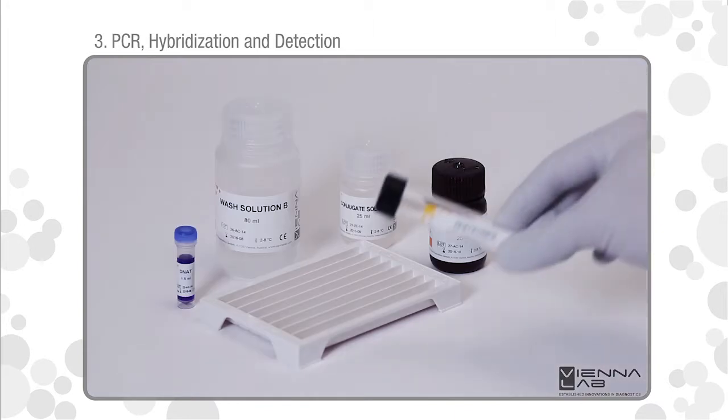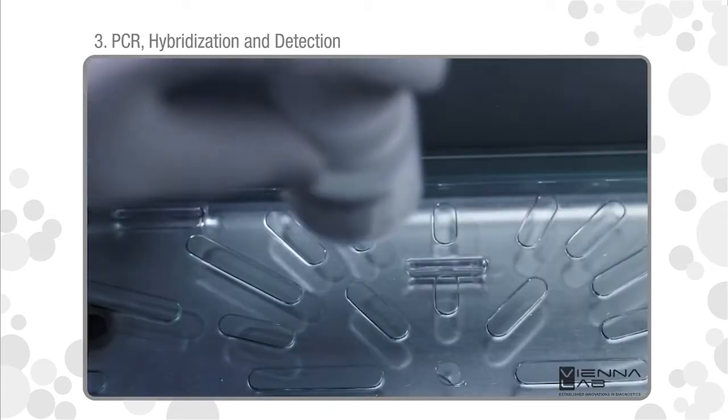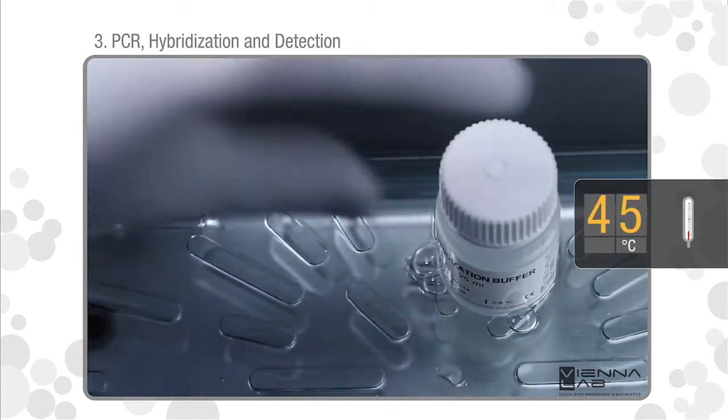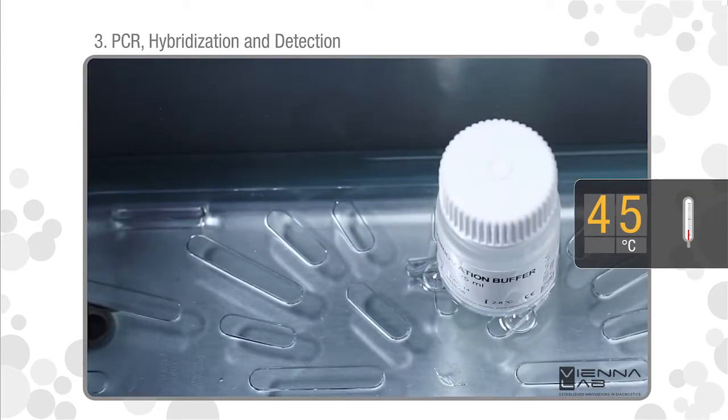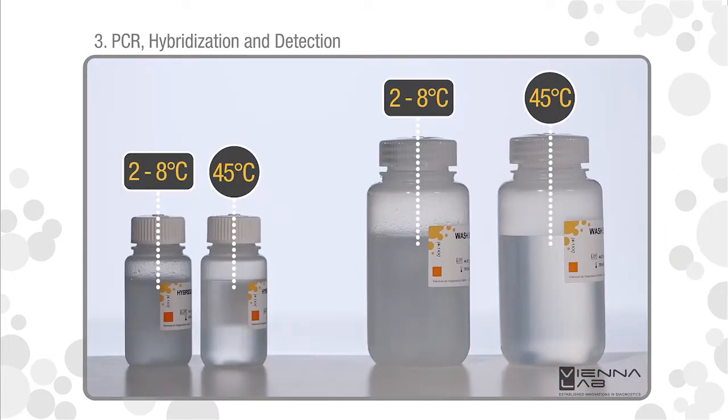Allow test strips, DNAT, conjugate solution, wash solution B, and color developer to reach room temperature. Prepare the typing tray. Pre-warm hybridization buffer and wash solution A to 45 degrees Celsius. Take care that all precipitates formed at 2 to 8 degrees Celsius become completely dissolved after pre-warming.